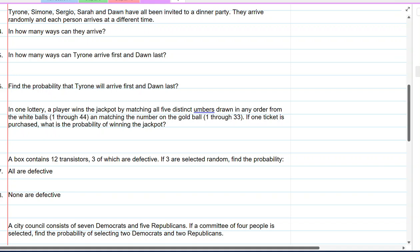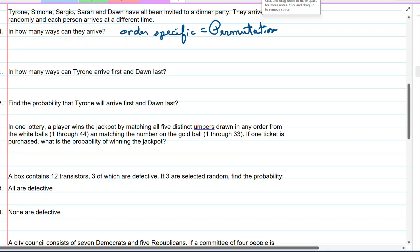It says Tyrone, Simone, Sergio, Sarah, and Dawn have all been invited to a dinner party. They arrive randomly, and that means no specific order. And each person arrives at a different time. How many ways can they arrive? Well, this is order-specific. So we're going to use our favorite permutation. We can either use the factorial or the structure, but I'm going to keep with the structure. Now we need the cardinality of our N. Our N is 1, 2, 3, 4, 5. And our R, the size, is all of them.